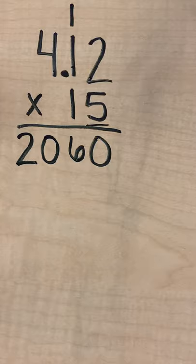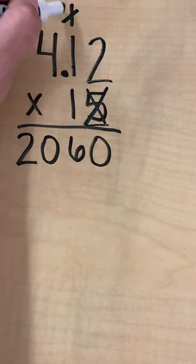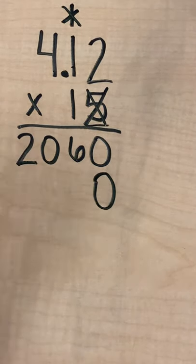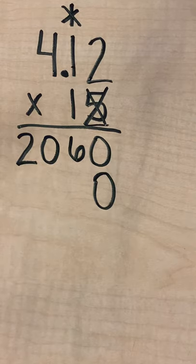So I am done with my ones place, so I can X that out, X out what I carried. And then I need to write my zero. Don't forget it, super important. Most common mistake when multiplying large numbers is forgetting to write that placeholder zero.